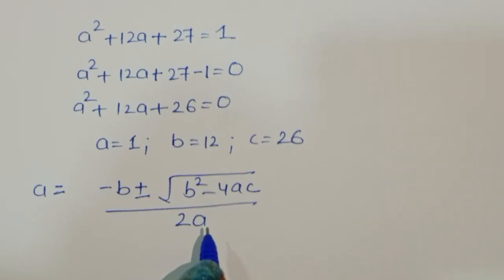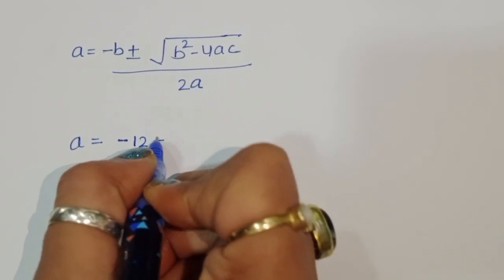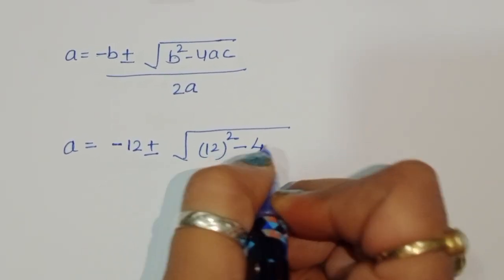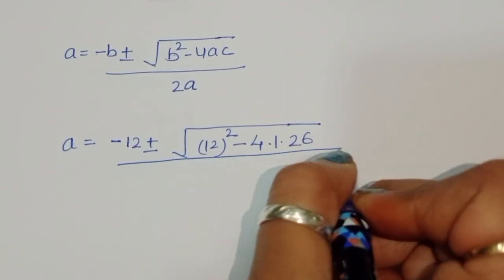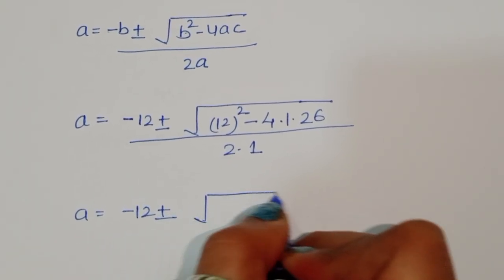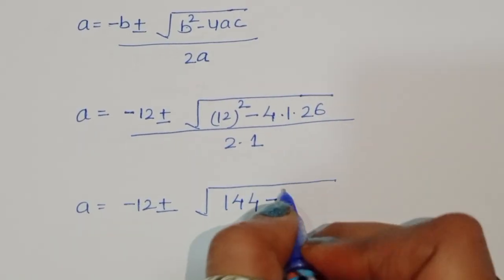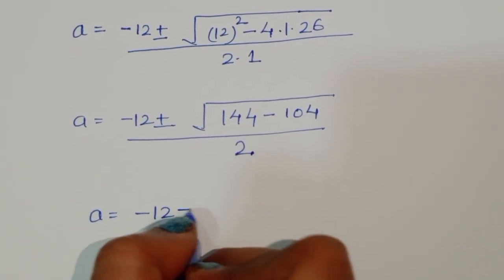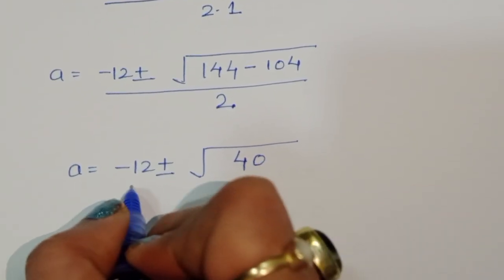Using the quadratic formula A = (-b ± √(b² - 4ac)) / 2a, we substitute: A = (-12 ± √(144 - 4×1×26)) / 2 = (-12 ± √(144 - 104)) / 2 = (-12 ± √40) / 2.